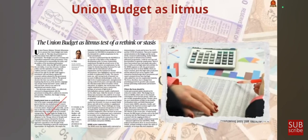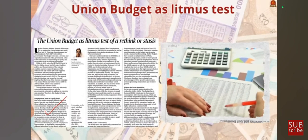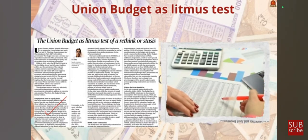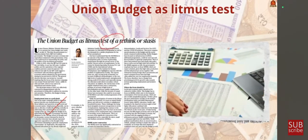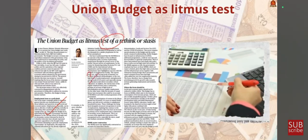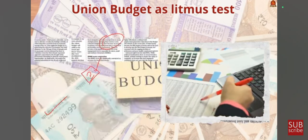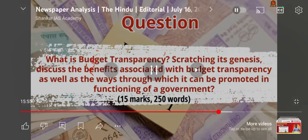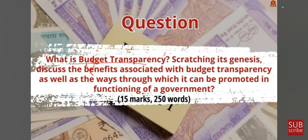This news article talks about the government's union budget. The author says that this budget is like a litmus test — it will strike the right balance or it will be flattened. So let us understand some important facts using our mains answer writing discussion. The question is: What is budget transparency? Discuss its genesis, the benefits associated with budget transparency, and the ways through which it can be promoted in the functioning of a government. This can be asked in GS Paper 3.